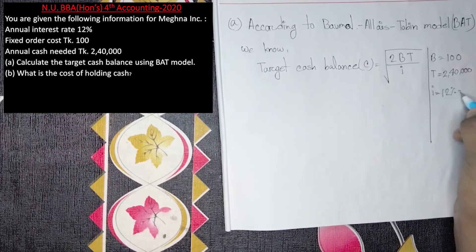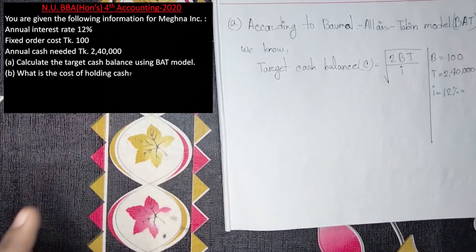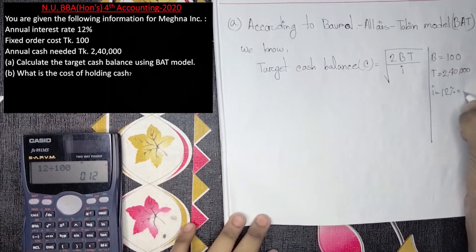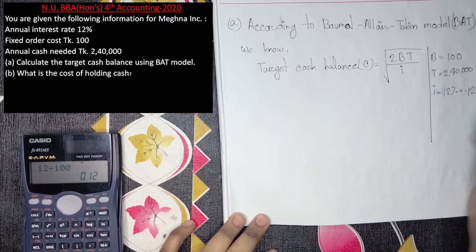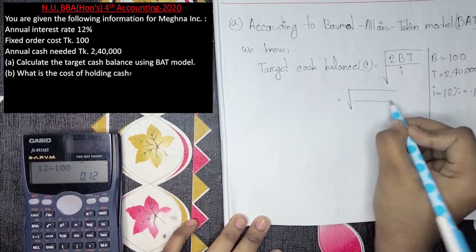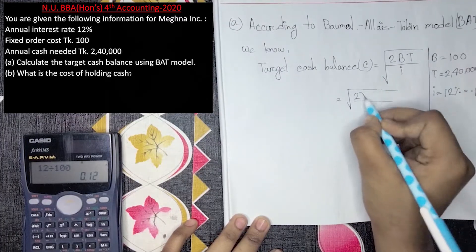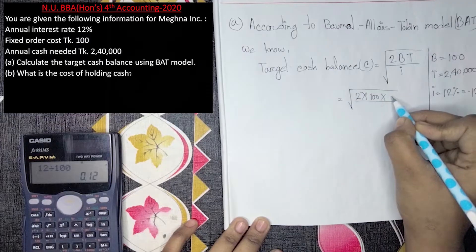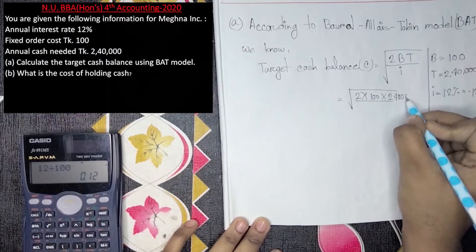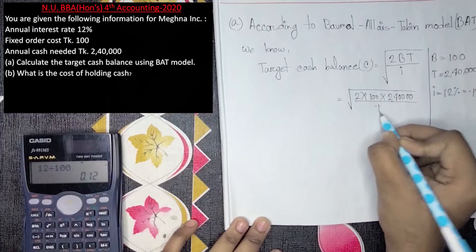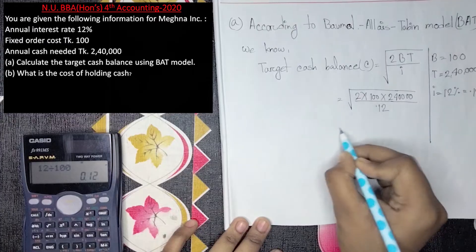The interest rate is 12%. It gives a total pile of days, bringing it to 0.12. We will raise value items as well. These are the figures for the problem.